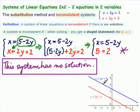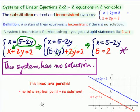Here is x plus 2y equals 5. Here is x plus 2y equals 2. The lines are parallel. There is no intersection point. No solution.